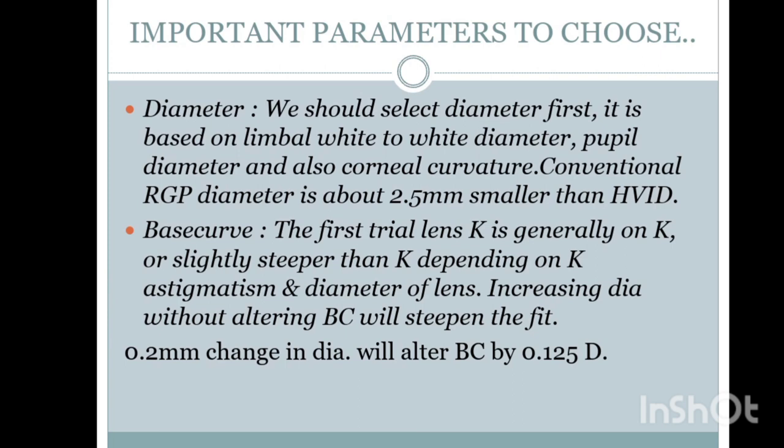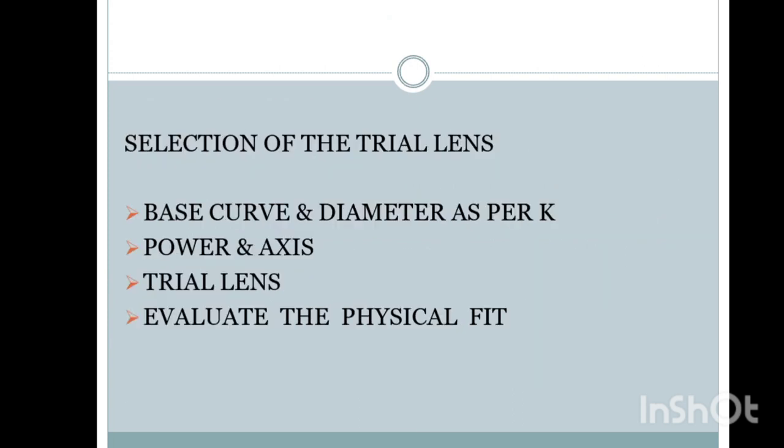A 0.2 mm change in diameter will alter the base curve by 0.125 mm. To select a trial lens, choose the base curve and diameter as per the K readings, power, and axis.